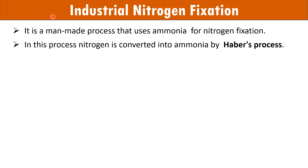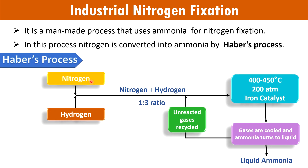We will end this video with the explanation of industrial nitrogen fixation. Industrial processes also fix nitrogen. It is a man-made process that uses ammonia for nitrogen fixation. In this process, nitrogen is converted into ammonia by Haber's process. In Haber's process, atmospheric nitrogen gas is mixed with hydrogen in a ratio of 1:3, then passed through the catalyst iron under a pressure of 200 atmospheres, with the whole process maintained at a temperature of 400 to 450 degrees Celsius.